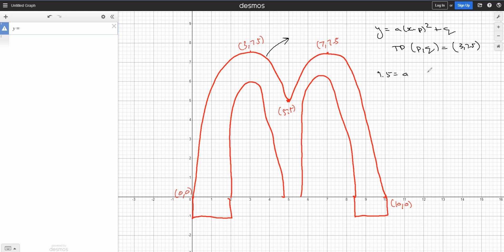So this is going to be 7.5, and that's going to be my y value. This number here will be 7.5, and that p value will be 3. So it'll be y equals a, x minus 3 squared plus 7.5. And all I need to do now is find the respective a value.